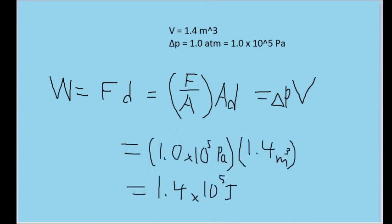Multiplying the pressure difference, 1.0 times 10 to the fifth power of pascals, times the volume of the water, 1.4 cubic meters, gets us an amount of work of 1.4 times 10 to the power of 5 joules.